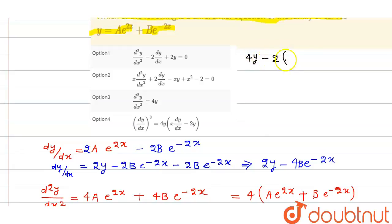This is minus 2 into 2y minus 4b e to the power minus 2x and this is 2y.